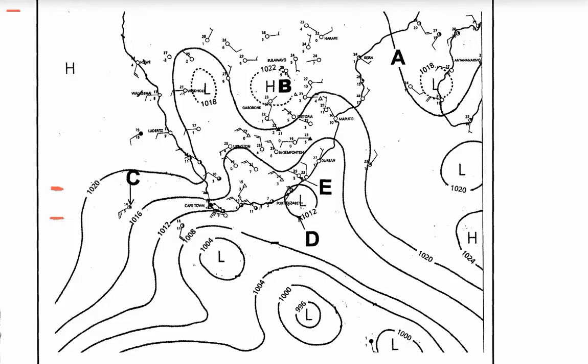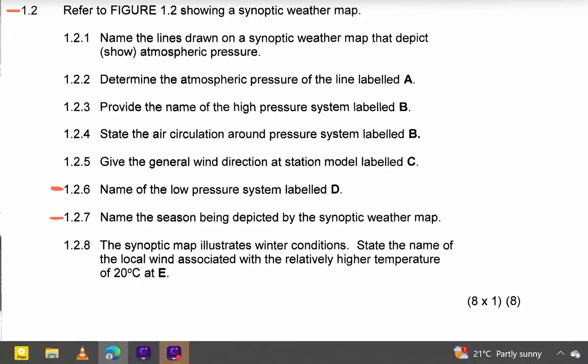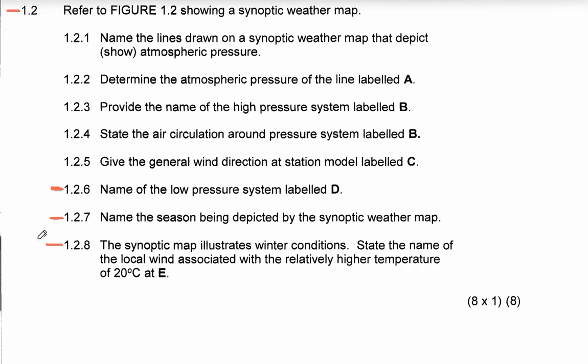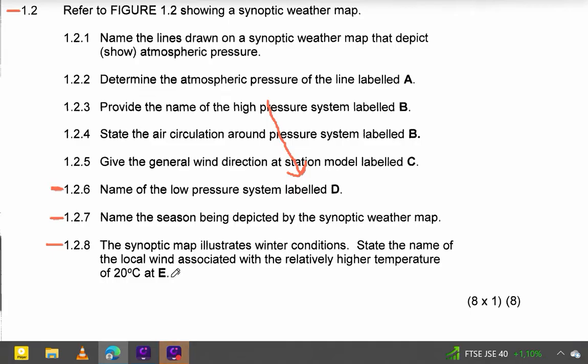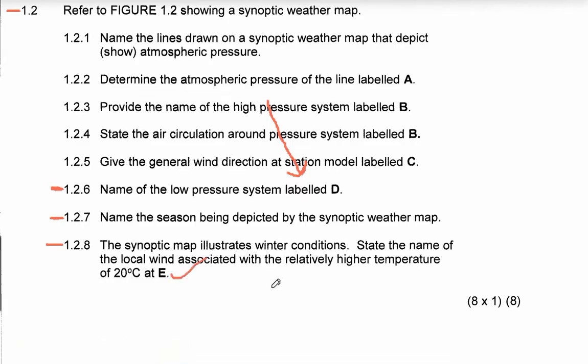The last question, 1.2.8: the synoptic map illustrates winter conditions. State the name of the local wind associated with the relatively higher temperature of 20 degrees at E. Those winds are berg winds — they are warm, dry winds that move from the Kalahari interior downward down the escarpment toward the coastal low pressure area. The answer is berg winds.